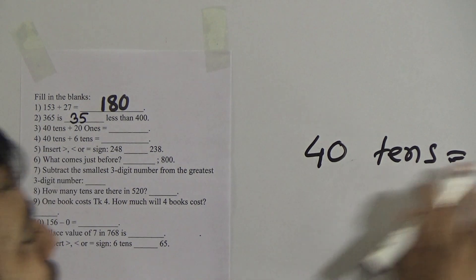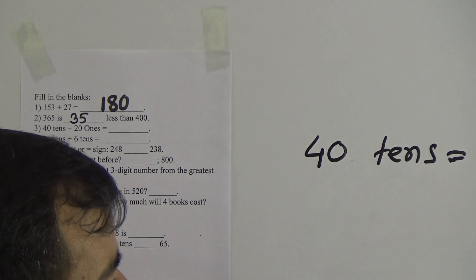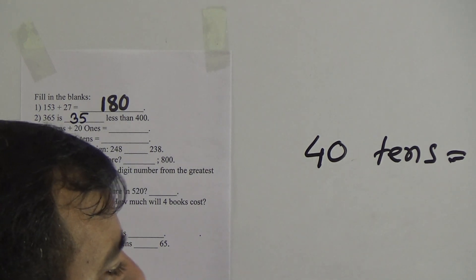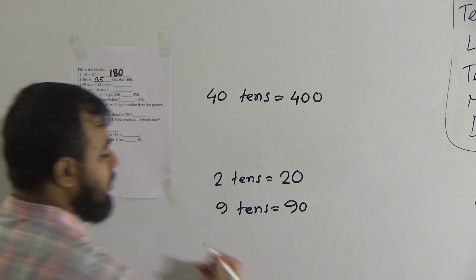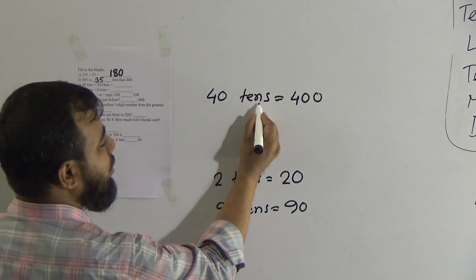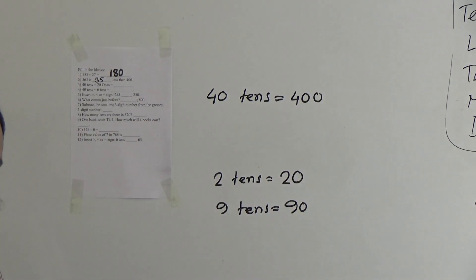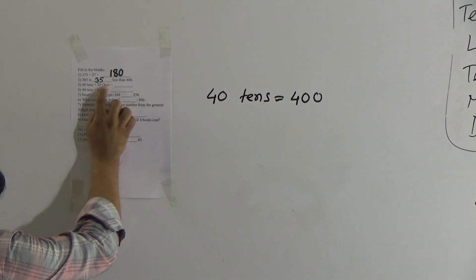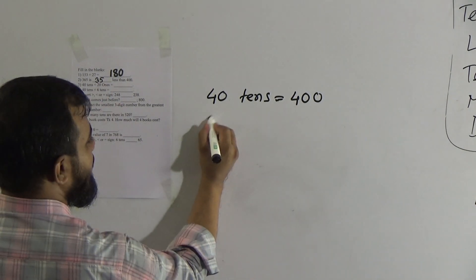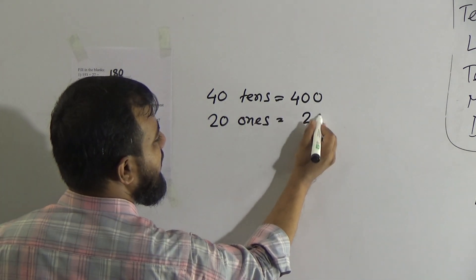How do we write this? Look — 2 tens means 2 and a 0, which makes 20. And 9 tens equals 9 and a 0. So like this, 40 tens means 40 and a 0, making 400. We need to add 21 to 400. But wait — 21 ones equals 20.